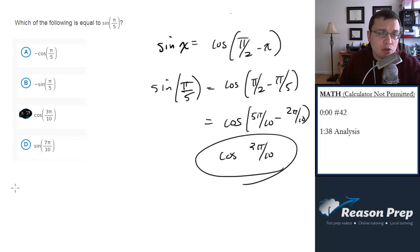That's one way to do it. You could also transform these into degrees. Whenever you see pi, that's the same as 180 degrees. So this becomes sine of 180 over 5, which is sine of 36 degrees.